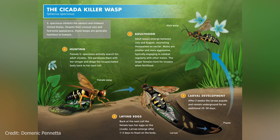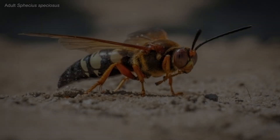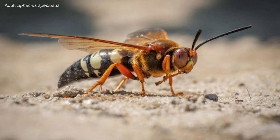In the wasp species Sfecius speciosus, adult females hunt North American cicadas, searching in trees and bushes. When she finds one, the female will sting it, injecting a venom into its abdomen and paralyzing the helpless insect. Once subdued, it is carried off to a previously dug burrow, deposited at the bottom, and the wasp lays her eggs on it. She then seals up the nest, trapping the paralyzed host inside. Within a few days, the eggs hatch and begin to consume the cicada, using it as a prolonged food source to sustain their development past the larval stage. In two weeks, they fully mature, emerging from the nest as adult wasps.